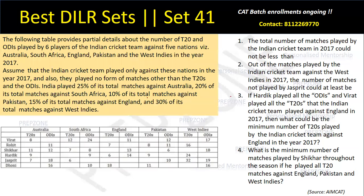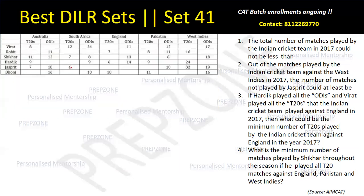Let me put the numbers here. Against Australia, India has played 25% of matches in T20 format. The team T20 total is 10, and ODIs are 30. Let me put all these numbers in the table.